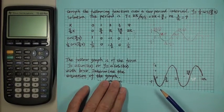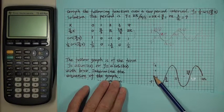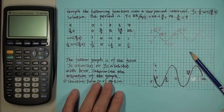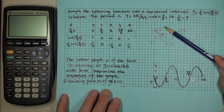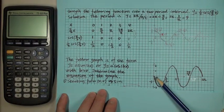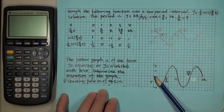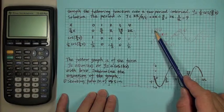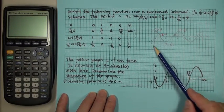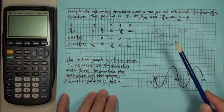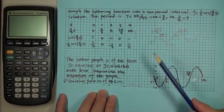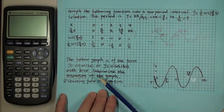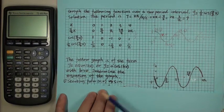Looking at the graph, the first thing to notice is that it starts from the origin (0, 0). Because cosine starts from either its highest or lowest value, and this graph starts from the origin, we know this must be a sine function.